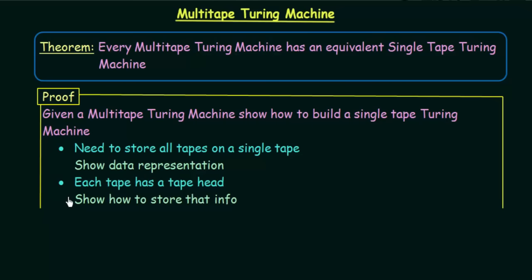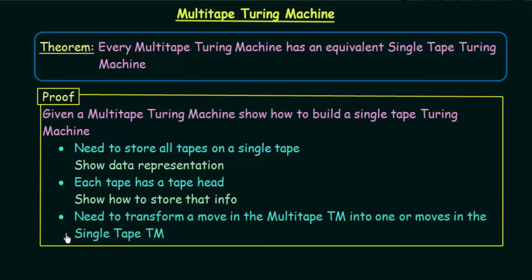The second step says each tape has a tape head and we have to show how to store that information. In multi-tape Turing machines, all individual tapes will have their respective tape heads. We have to show how we can represent those multiple tape heads on the single tape — storing the information about where each individual tape head is pointing.